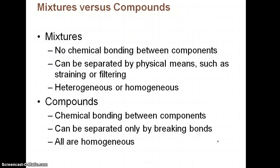So mixture versus a compound. A mixture, you're not going to have any kind of chemical bonding between the components. So you actually can separate them by physical means, even if it is by straining or filtering. You can have heterogeneous mixtures where it's different. Remember, hetero means different. Homogeneous means it's made up of the same solute. Compounds actually have chemical bonding between the components. And you can only separate them by actually breaking bonds. And all of them are going to be homogeneous.